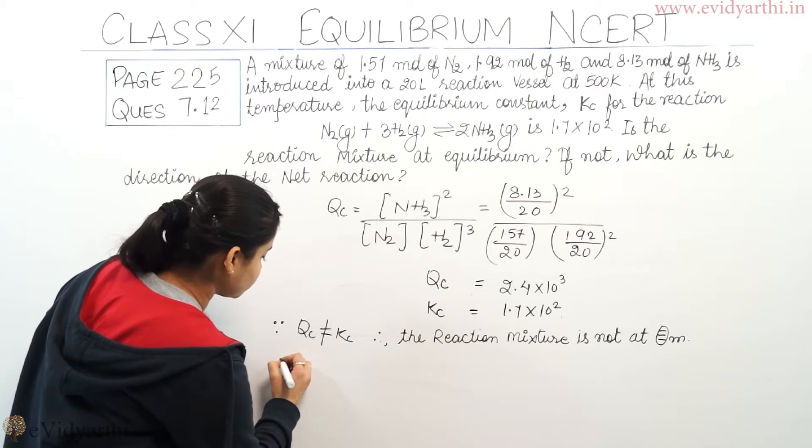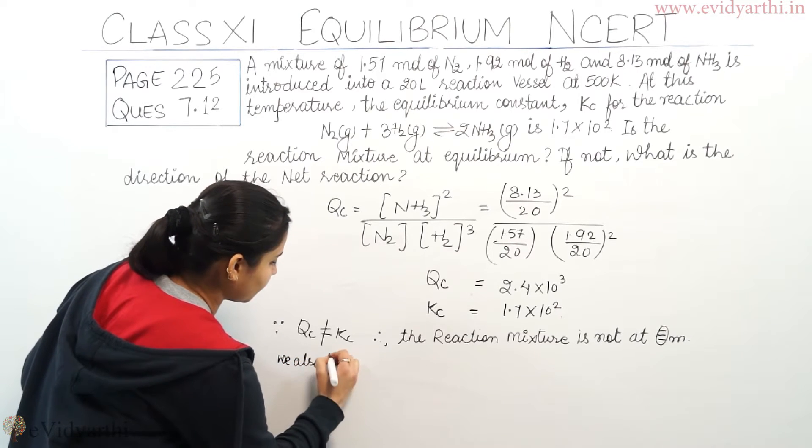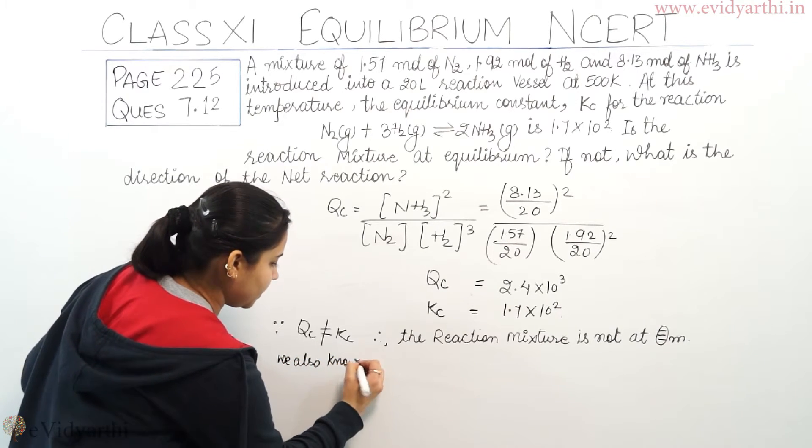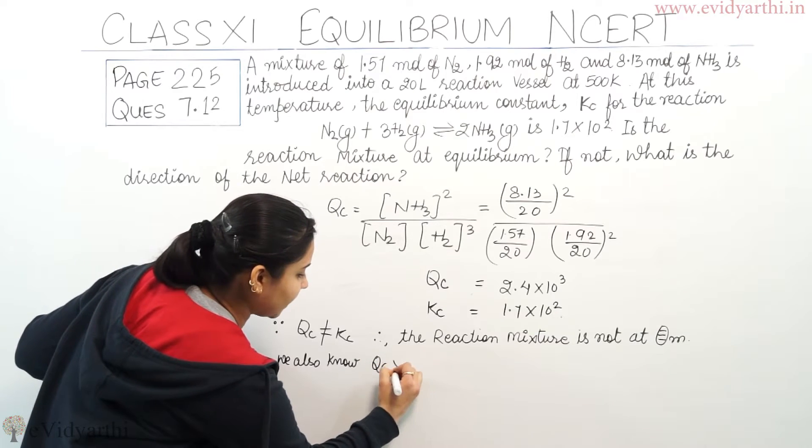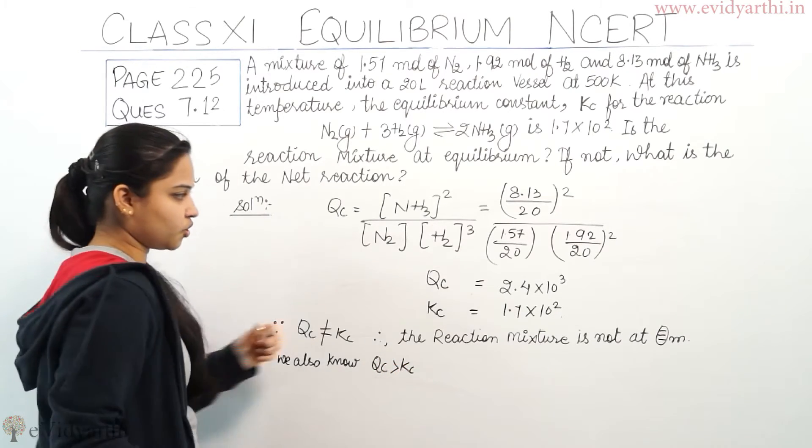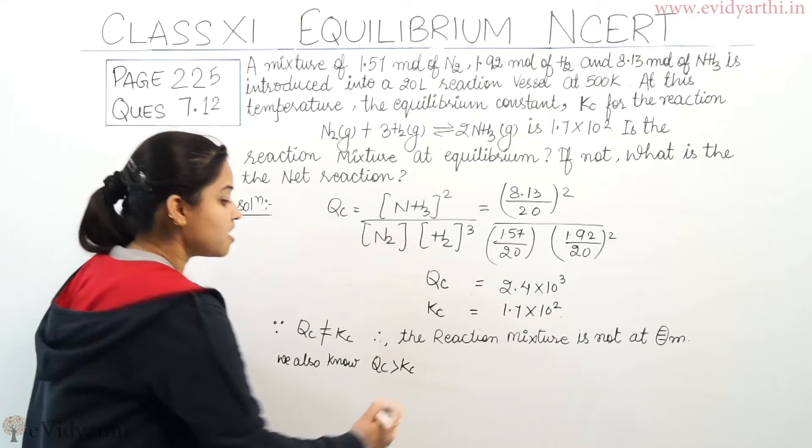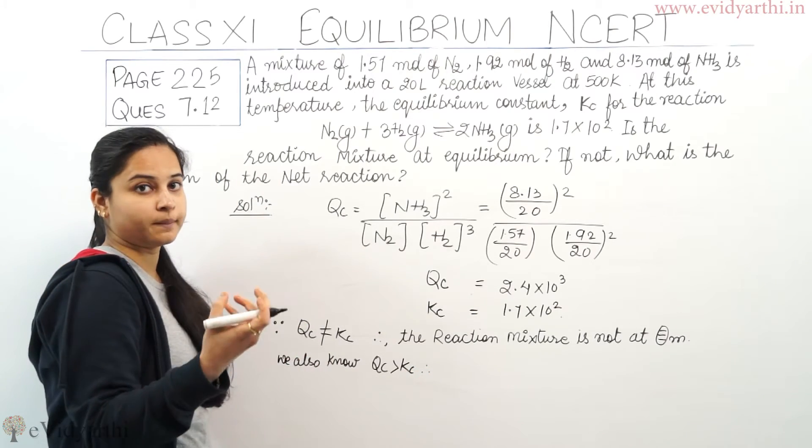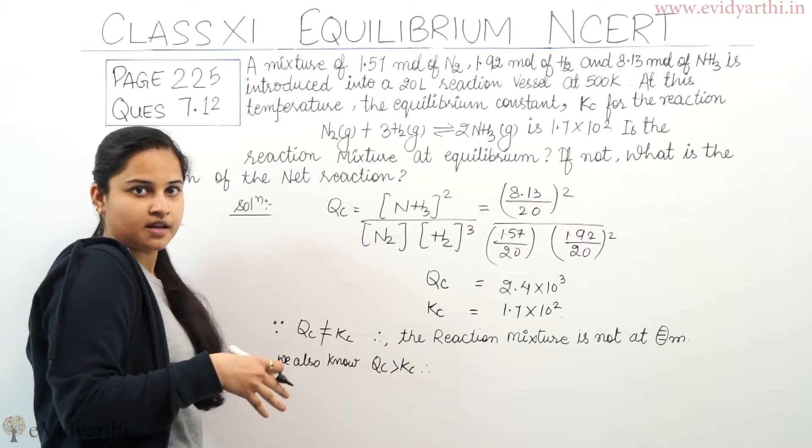Moreover, we also know that Qc is greater than Kc. You can see Qc ki value greater than Kc ki. Therefore, the direction of the reaction will be in the reverse direction.